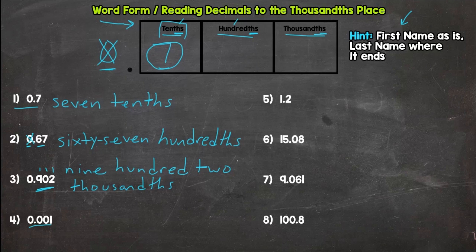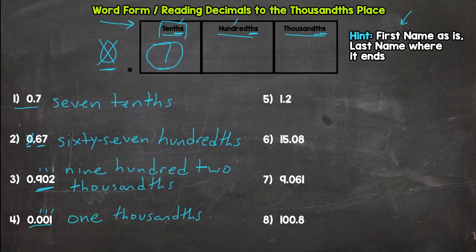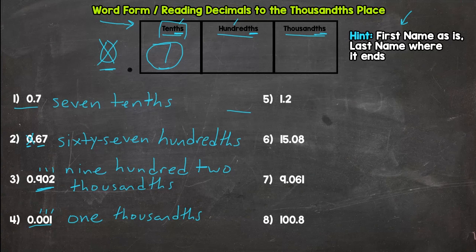Number four: we don't have any wholes, and it's a somewhat unusual number because there are zeros in front — but all that is is a one. First name as is: one. Where does it end? Tenths, hundredths, thousandths — it ends in the thousandths. So you would say one thousandths, and you'd be done. Notice that numbers one through four all have zero wholes.